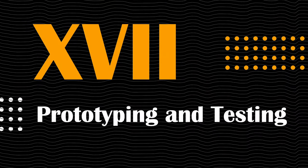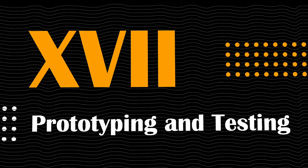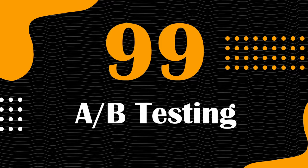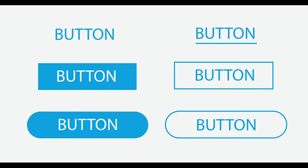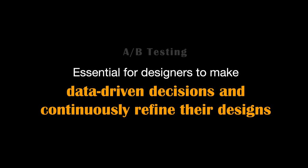Our last section is about prototyping and testing. A/B testing is a powerful method in design that involves presenting users with two or more design variations to determine which one performs better in terms of user engagement, conversion rates, or other key metrics. For example, a designer might A/B test two different button designs on a website to determine which one generates more clicks and conversions. It's essential for designers to make data-driven decisions and continuously refine their designs based on user preferences and behavior.